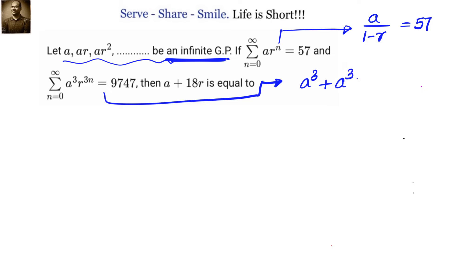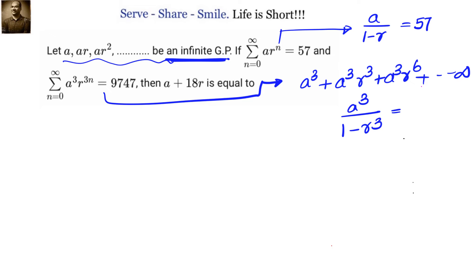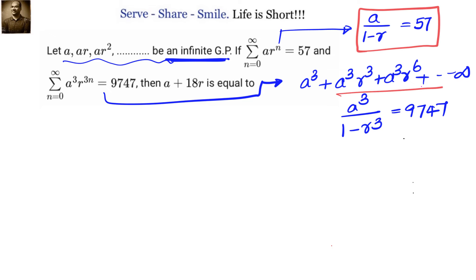We get A³ plus A³·R³ plus A³·R⁶... So we have an infinite GP in which the first term is A³ and the common ratio is R³. The sum of infinite terms gives A³ by (1 minus R³), and that equals 9747, as the first term is A³ and the common ratio is R³.